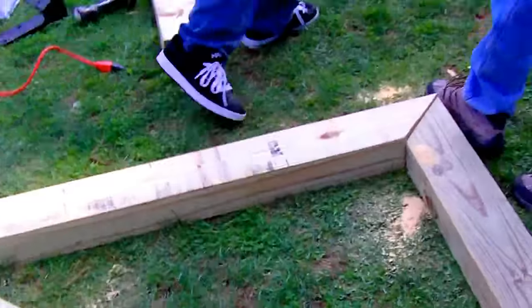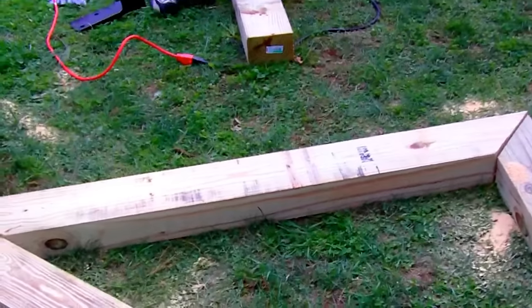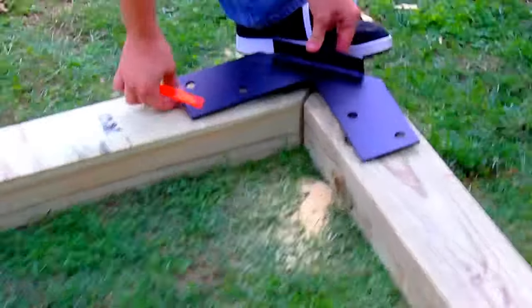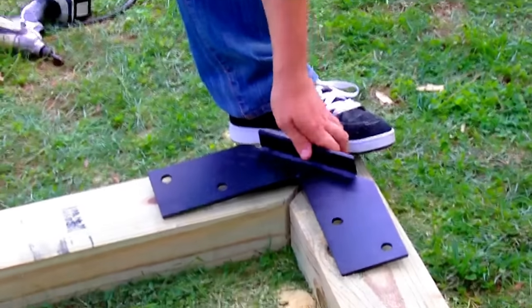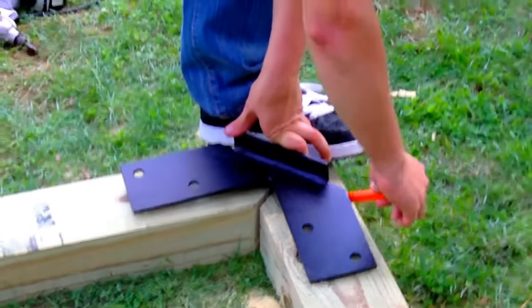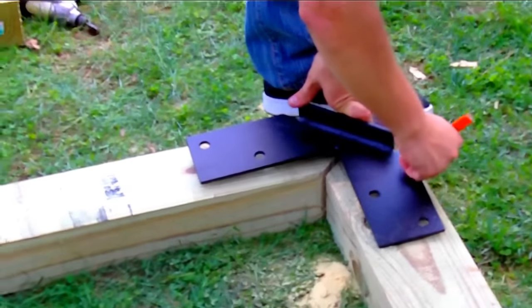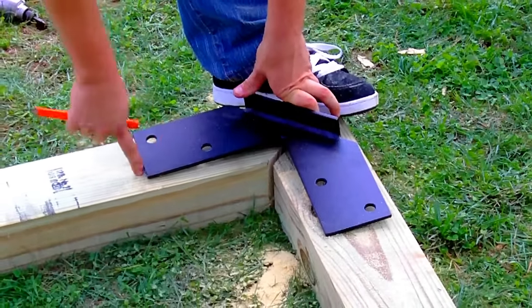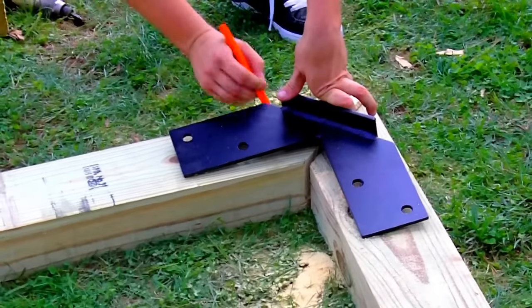You should now have something that looks like this. Now we have to cut off the bottom point. First, take your 90-degree angle tribeam hardware and hold it up so that it's evenly spaced between the two pieces. The two brackets should be right in the middle of your bottom pieces like so. Take a pencil and mark both sides of the hardware bracket.